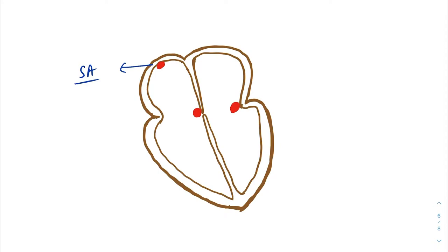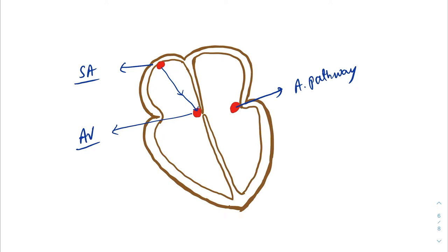Suppose this is the SA node and this is the AV node, and this is the accessory pathway. Normally, when the SA node fires, the impulse travels through the atria and reaches the AV node. From the AV node, the impulse travels through the His bundle and then to the Purkinje fibers, and ultimately stimulates the ventricular myocardium. But if there is an accessory pathway present, some of the impulses from the SA node will travel through the accessory pathway and stimulate part of the ventricular myocardium.